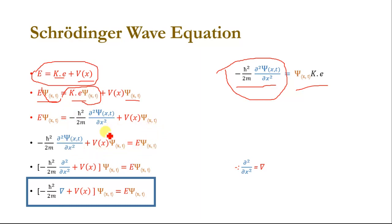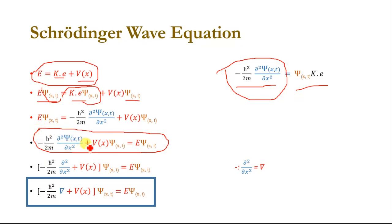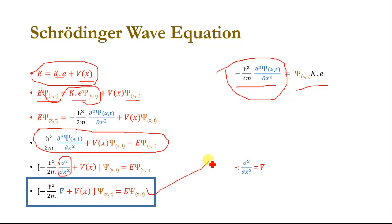Rearranging this equation, we finally get the Schrödinger wave equation. Taking psi(x,t) common, we have [minus h-bar²/2m times the Laplacian (∇²) plus V(x)] times psi(x,t) equals E·psi(x,t). This is the Schrödinger wave equation.